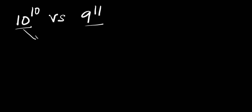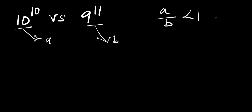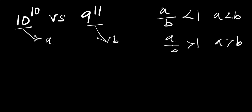We can say let this be our a and this is our b. So if we have a divided by b and this is less than 1, that means a is less than b. Also if we have a divided by b and this is greater than 1, that means a is greater than b.